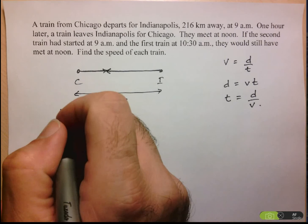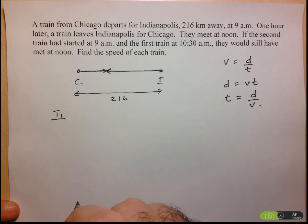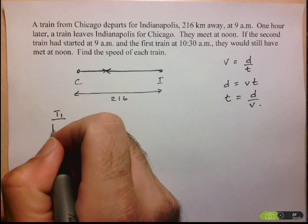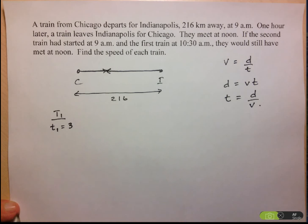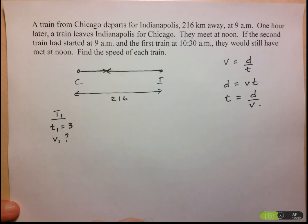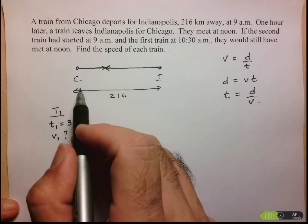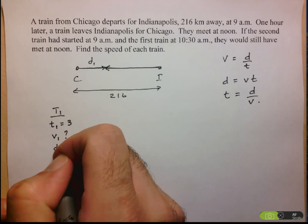So let's take one train at a time. Let's take train one. What information do we have about train one? Well, we know that it starts at 9, they meet at noon, so we know that it travels for 3 hours. We're looking for its speed. That's our unknown here. And we're not given the distance that it travels, but we know it makes up a part of this 216 kilometers.